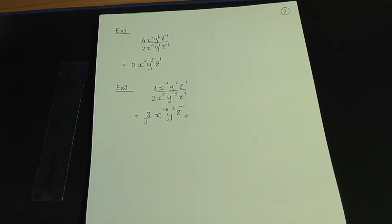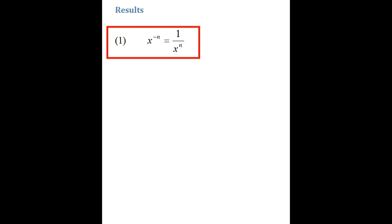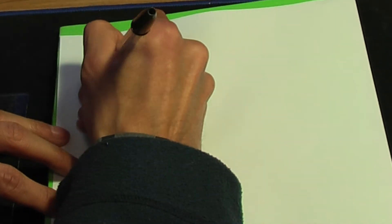Back to the screenshot. We have some results involving indices. The first result is x to the power minus n, and that is the same as 1 over x to the power n. Let's go back to the paper and pen and see this rule in action. x to the power minus n is the same as 1 over x to the power n.